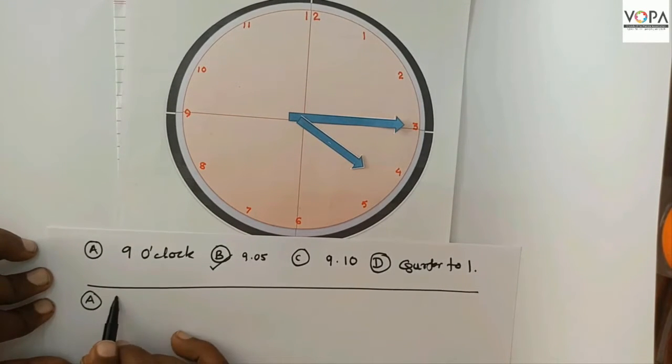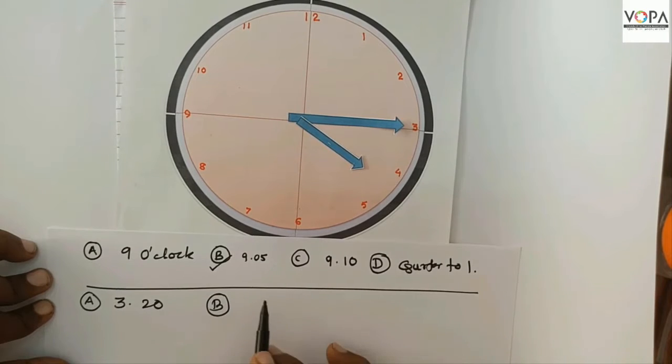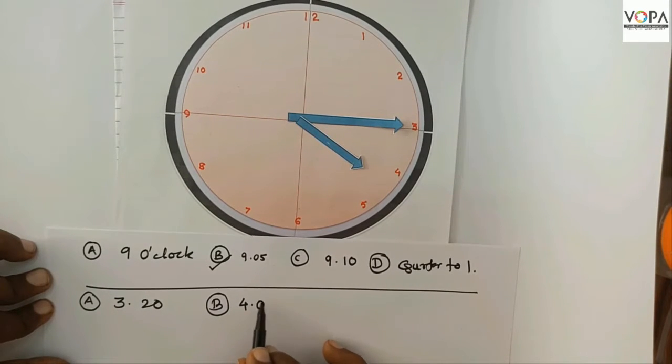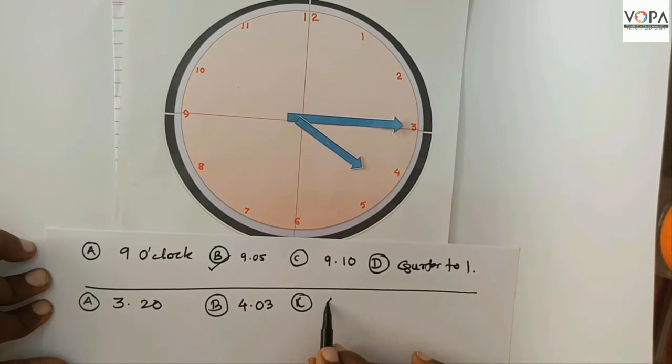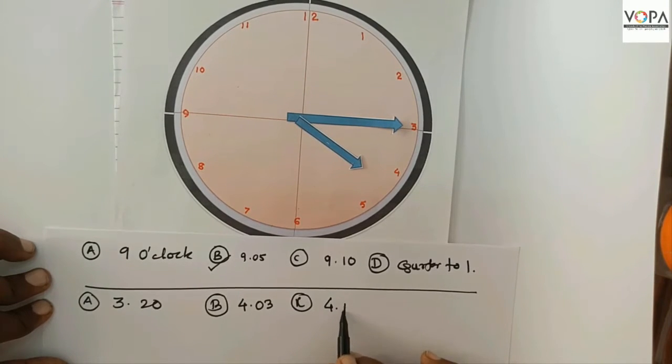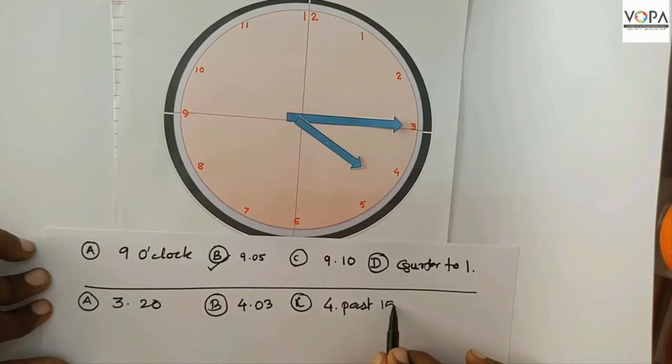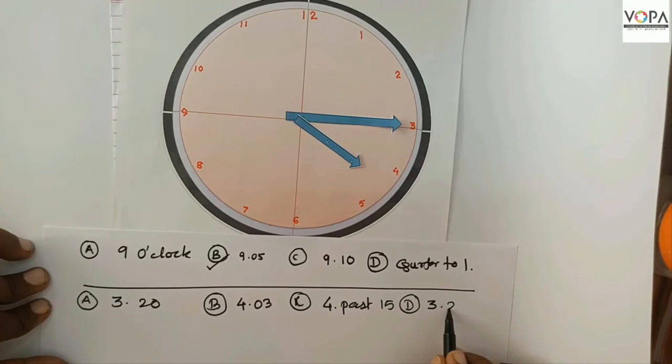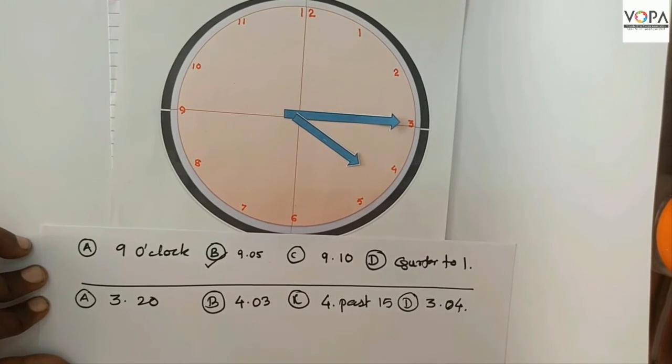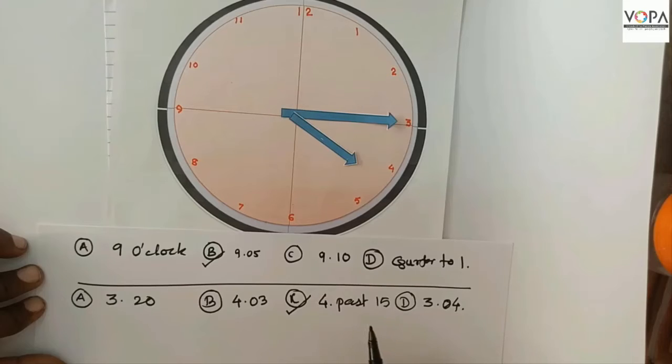Is it 3:20? Is it 4 past 3? Is it 4 past 15? Or is it 3 past 4? The correct answer is 4 past 15.